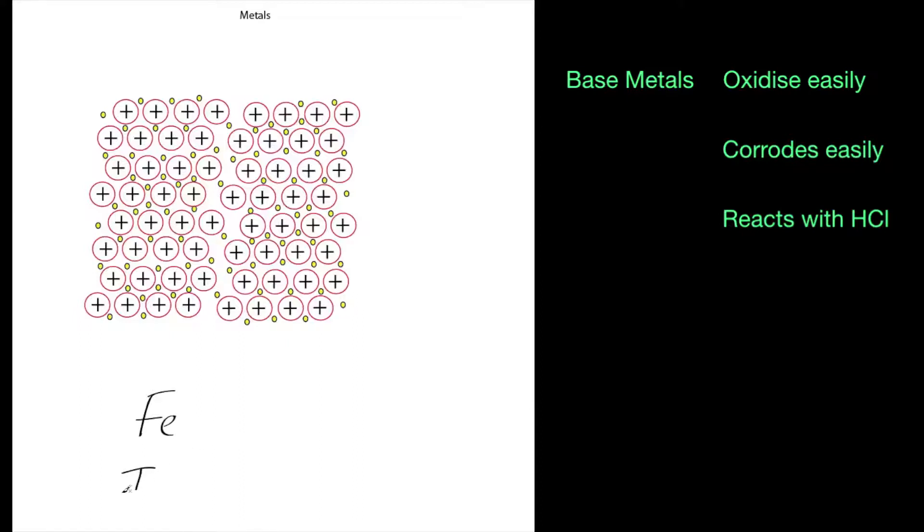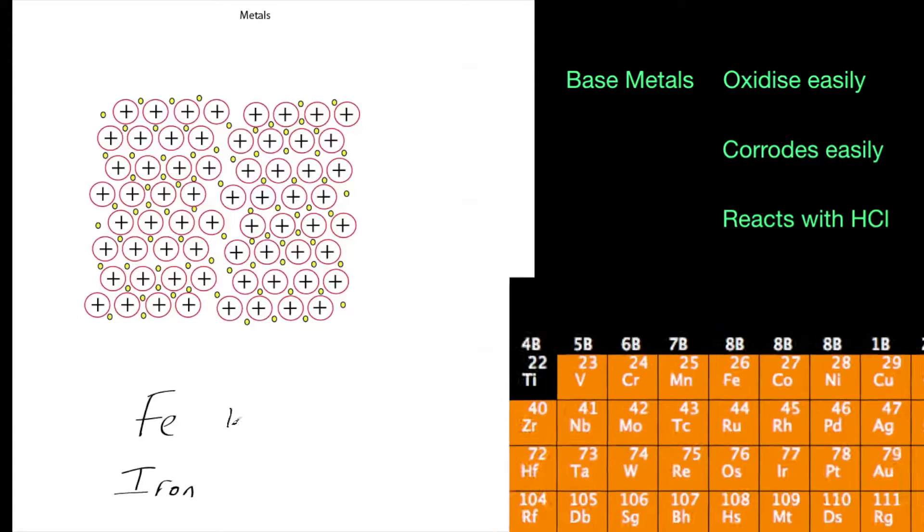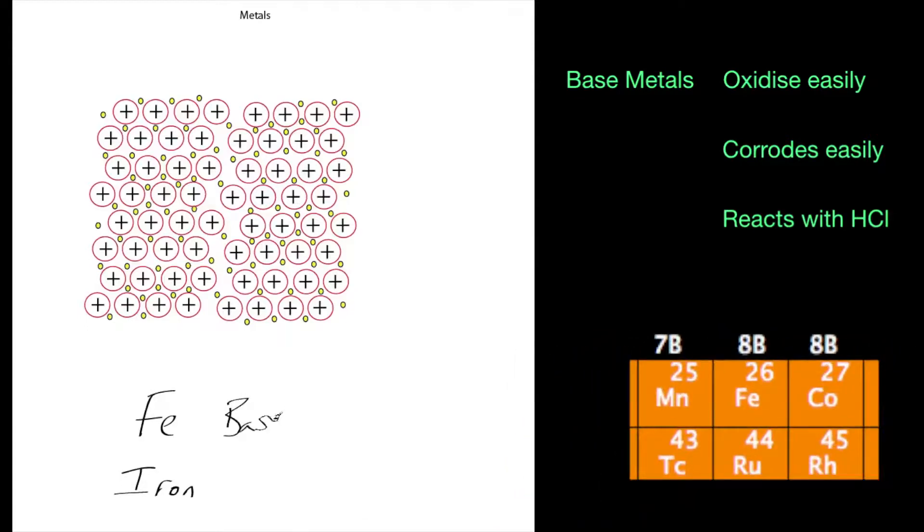So iron has a chemical symbol Fe, and that's iron in the periodic table. I'll put the periodic table up so you can see where it comes. Iron is a base metal and all that means is that it's quite susceptible to be oxidized.